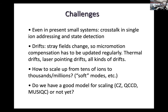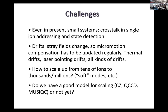A question on what degree of freedom encodes zero and one: it's usually the hyperfine states of the ground state, but sometimes it's optical — ground state and a metastable excited state. It could also be Zeeman levels. So it's some pair of levels, depending on the ion species and experiment.